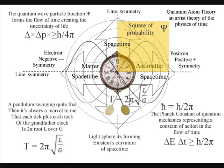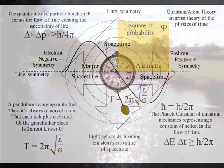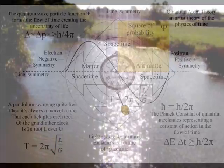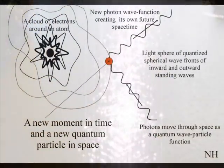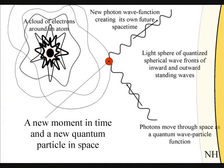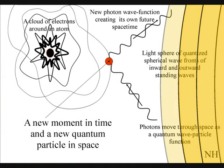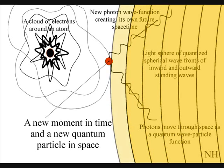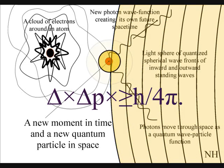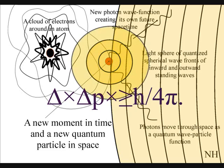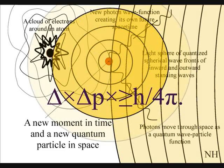Therefore quantum mechanics represents the physics of time as a physical process. The spontaneous absorption and emission of light represented by the quantum wave particle function or probability function forms the uncertainty known as Heisenberg's uncertainty principle. This represents the same uncertainty we have with any future event.